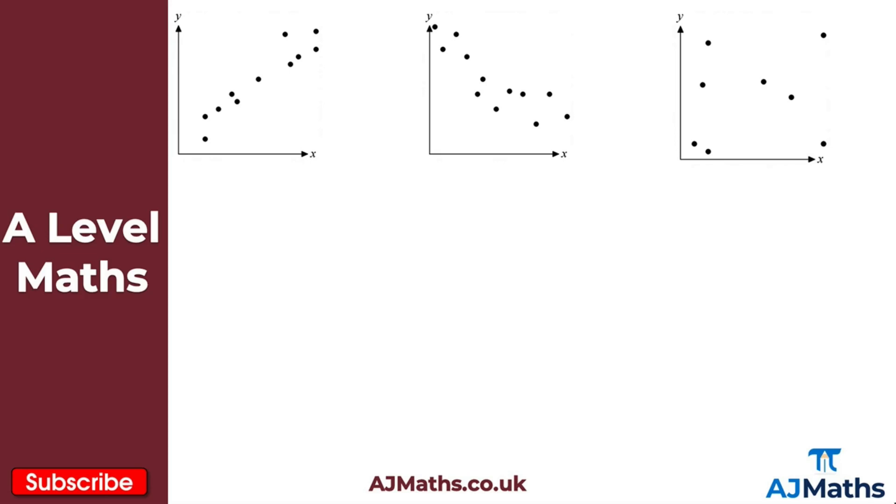Generally with bivariate data we plot that on a scatter diagram and mark the points as crosses. My diagrams are slightly different to what you'd normally see, so it may be a little bit inaccurate, but it doesn't really matter too much because what I really want to show here is the different types of correlation.